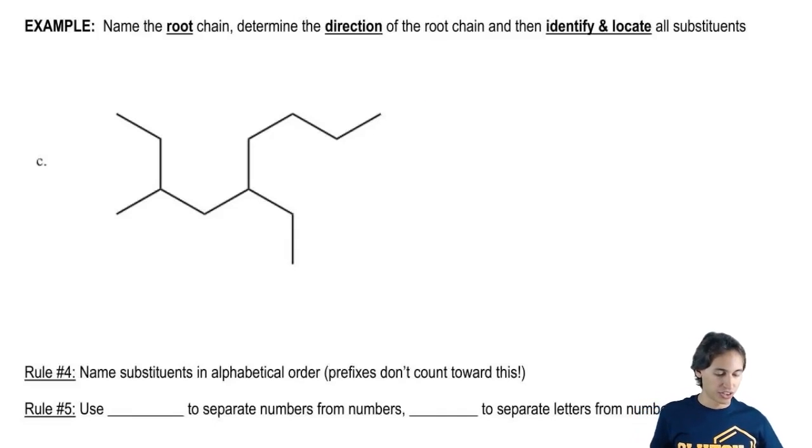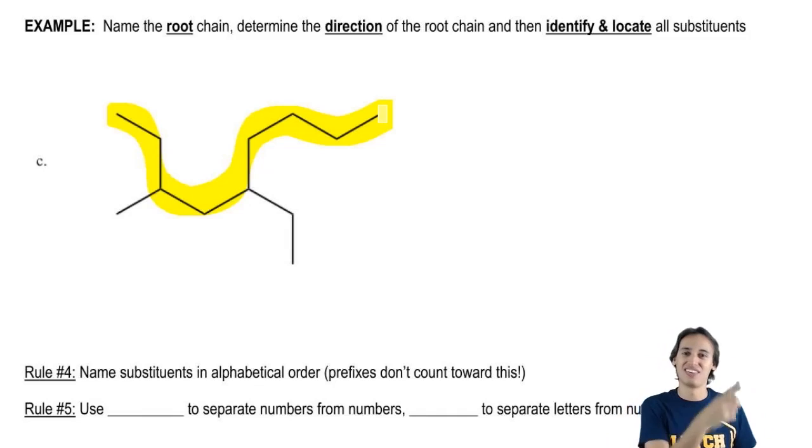All right, guys. So hopefully you got that the longest chain was actually this one right here. I know that can be tricky to visualize because you're not used to thinking of curving around stuff. You're used to seeing things just from left to right and things in a straight line. But the longest chain just is the longest continuous chain of atoms. So that would be that swirly one right there.